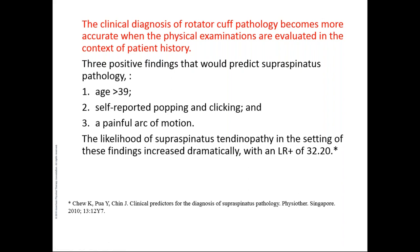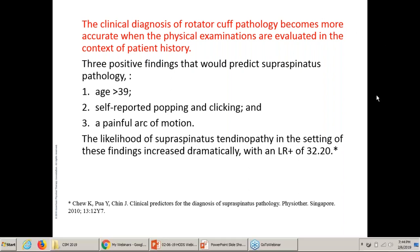If you have three positive findings — age more than 39, self-reported popping and clicking, and a painful arc of motion — the likelihood of supraspinatus tendinopathy increases to a likelihood ratio of 32.20. We always assess findings in combination: history, special tests, patient presentation, age, reported popping or clicking, and painful arc of motion. Nothing is evaluated in isolation — you don't just rely on physical exam, ultrasound, or EMG alone. Everything must be put into perspective with clinical correlation.